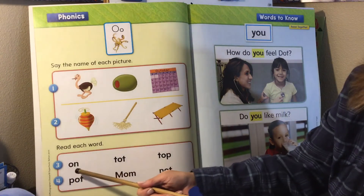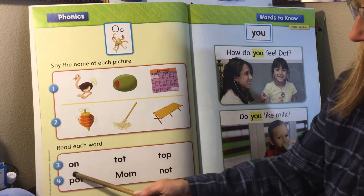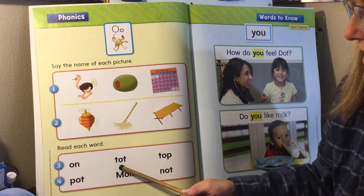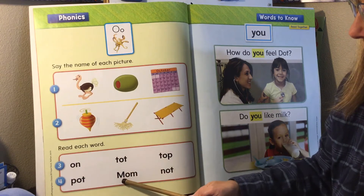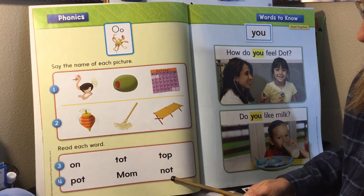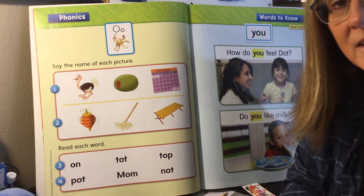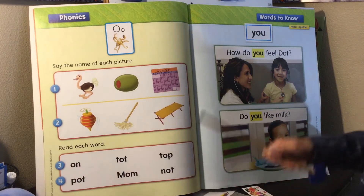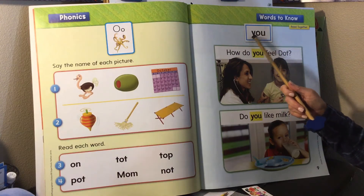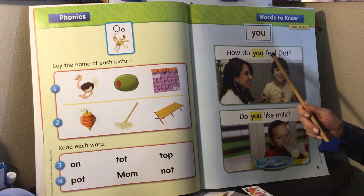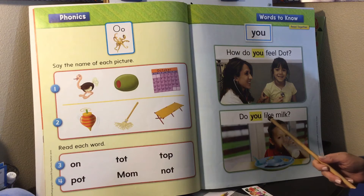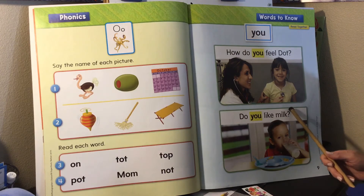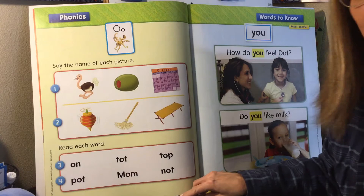Down here I have some words: on, hot, top, pot, mom, and not — all of these words have an 'ah' sound in them. Over here, our new word is 'you' — Y-O-U. How do you feel? There's a question mark at the end — it's a question. Do you like milk? Here's another question. Those are some question words.